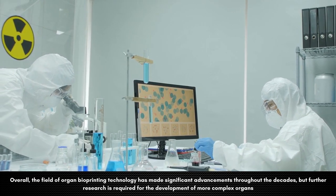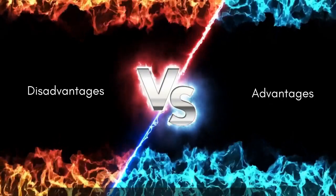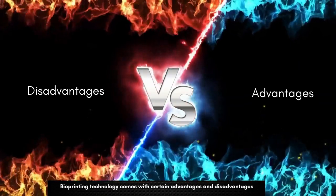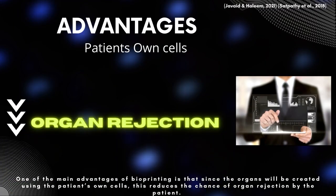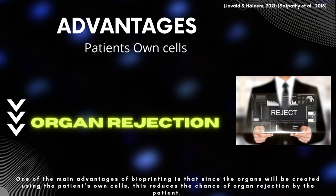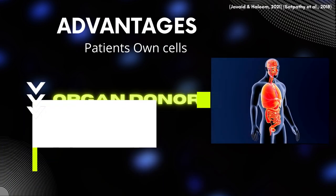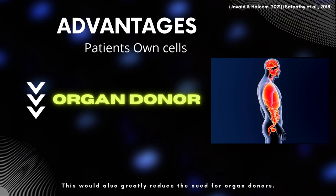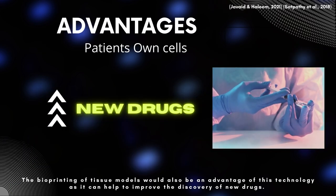Overall, the field of organ bioprinting technology has made significant advancements throughout the decades, but further research is required for the development of more complex organs. Bioprinting technology comes with certain advantages and disadvantages. One of the main advantages of bioprinting is that since the organs will be created using the patient's own cells, this reduces the chance of organ rejection by the patient. This would also greatly reduce the need for organ donors.